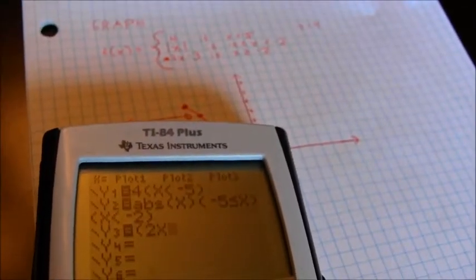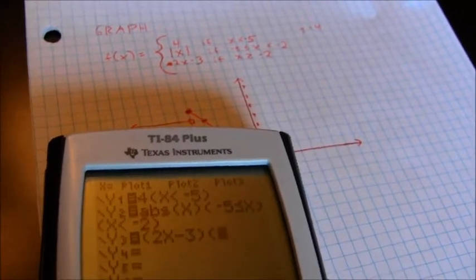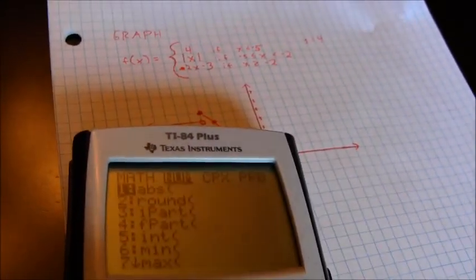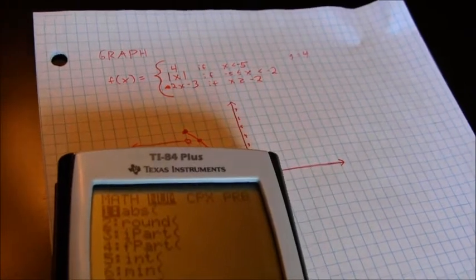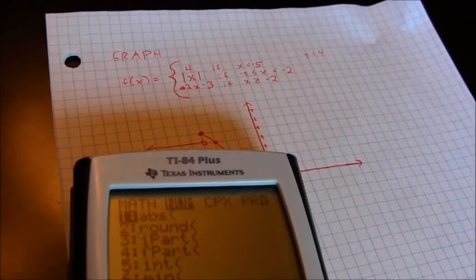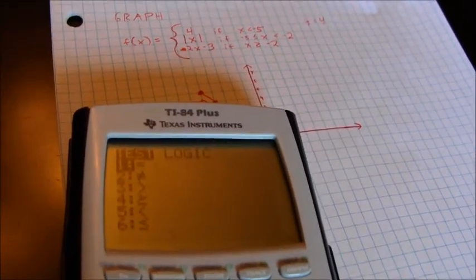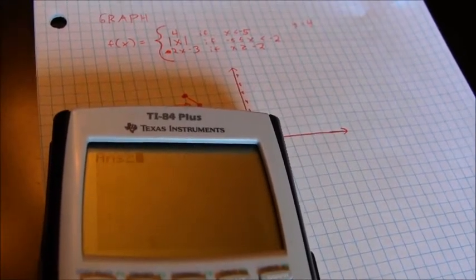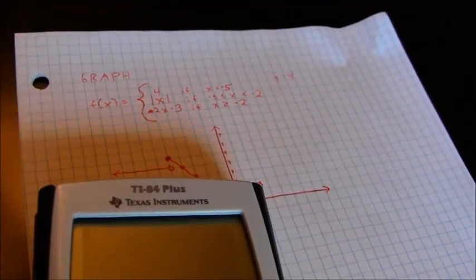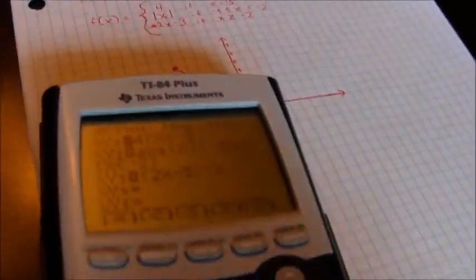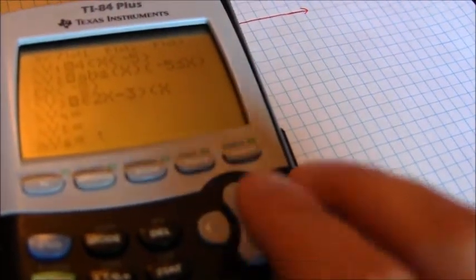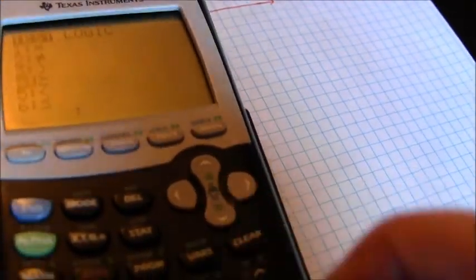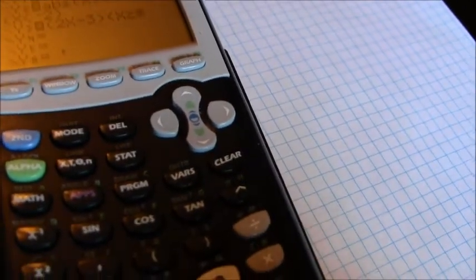So for 2x minus 3, I need that whole 2x minus 3 inside parentheses. Then I can do my requirement for the x value. x has to be greater than or equal to negative 2. So test greater than or equal to negative 2.